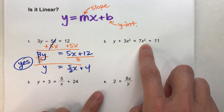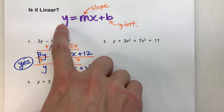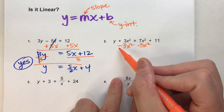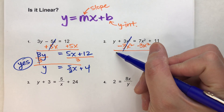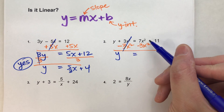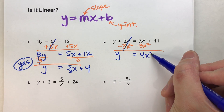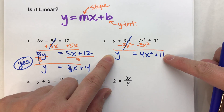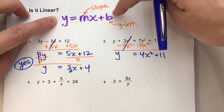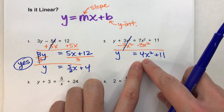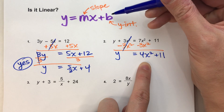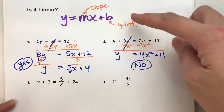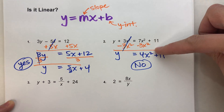Example two: y plus 3x squared equals 7x squared plus 11. To get y by itself, I'll subtract 3x squared from both sides. The 3x squareds undo each other, and on the other side 7x squared minus 3x squared leaves 4x squared, plus 11. So y equals 4x squared plus 11. This is not linear — it looks close to slope-intercept form but it has x squared, not just x.